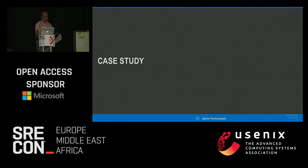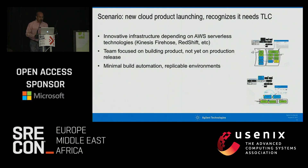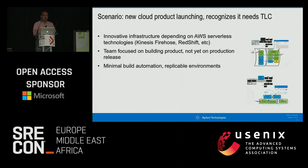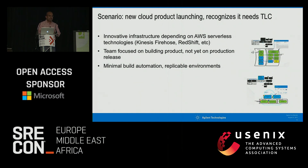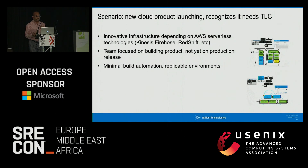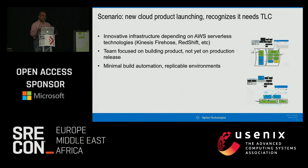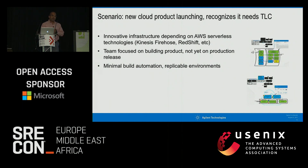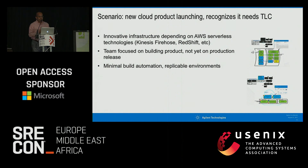One of the first things that happened when I joined was that we had another product in my division — started about a couple of years ago, and it's a pretty groundbreaking way of analyzing instrument logs and instrument information. It uses a lot of serverless technologies, including Kinesis Firehose and Redshift within the Amazon world. The team is really good at focusing on product — they built a fantastic product and want to release it in the next several months — but what we noticed is there's minimal build automation and they haven't really done a lot of release planning.